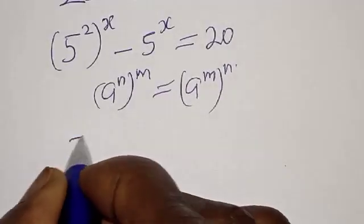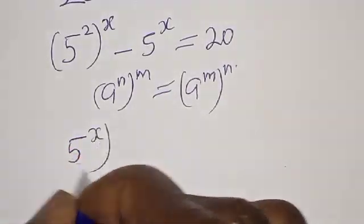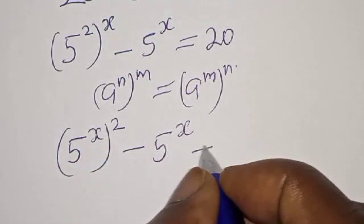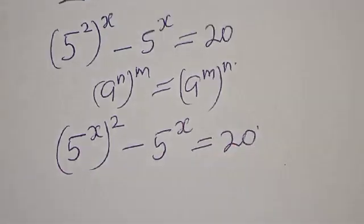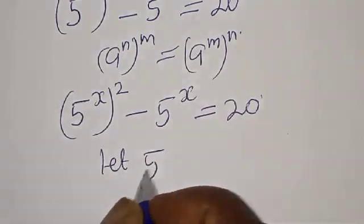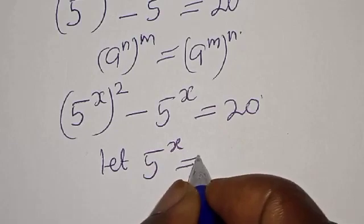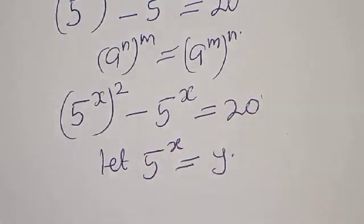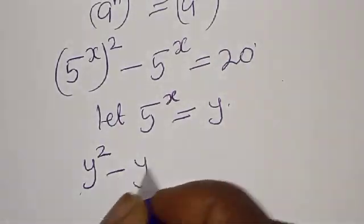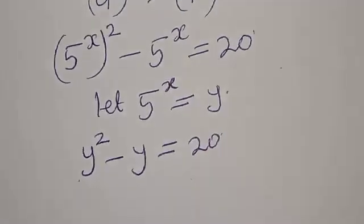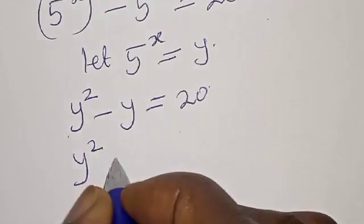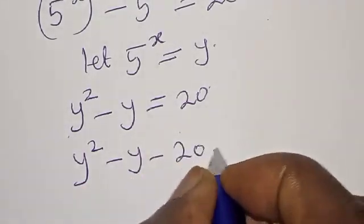We have 5 raised to power 2x minus 5 raised to power x is equal to 20. Let y equal 5 raised to power x. Then we have y squared minus y is equal to 20. Bringing 20 to the left hand side, we have y squared minus y minus 20 is equal to 0.